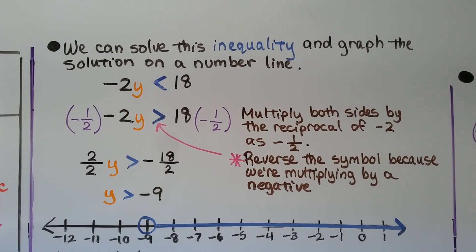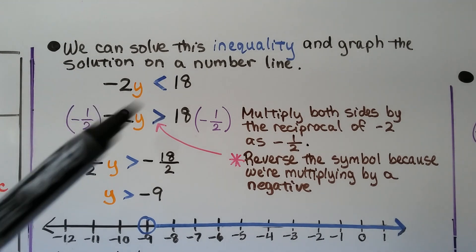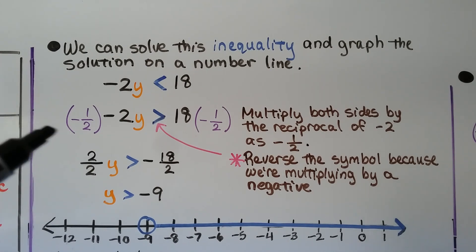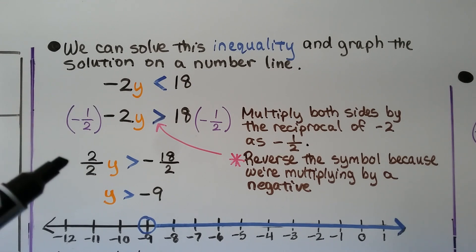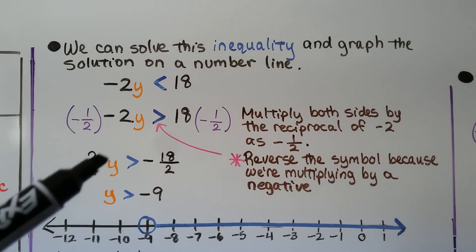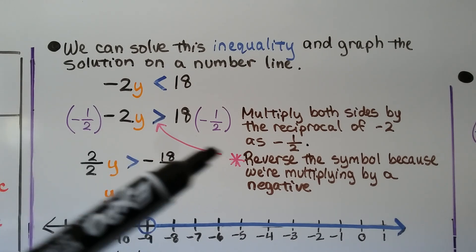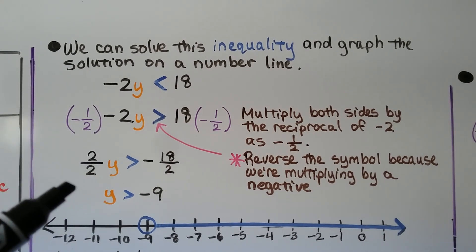We can solve this inequality and graph the solution on a number line. We have negative 2y is less than 18. We multiply both sides by the reciprocal of negative 2, which is negative one-half. Remember, the reciprocal takes the sign, so it's negative one-half. Negative times a negative gives us positive 2/2, so y is greater than negative 18/2. We reverse the symbol because we're multiplying by a negative — now it's greater than. We simplify to get y is greater than negative 9.